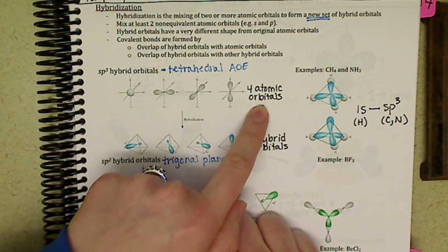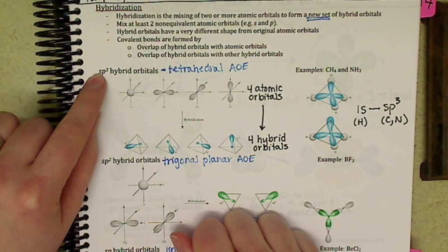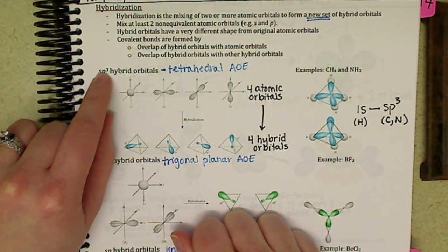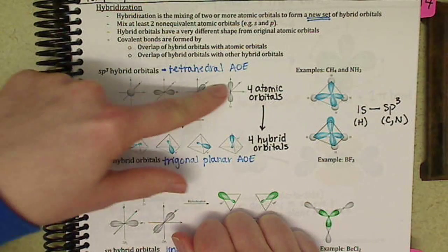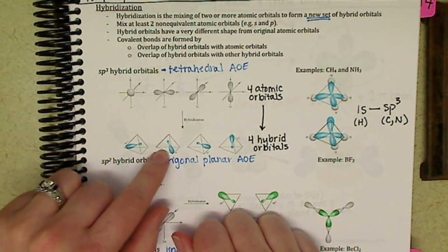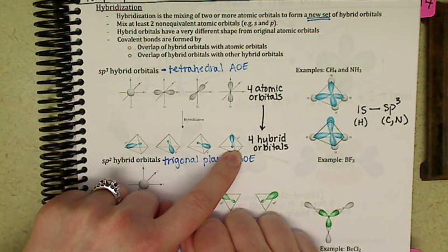So we take our 4 atomic orbitals - we have 1S and then 3Ps, so 1 plus 3 is 4. 4 atomic orbitals, add them up, divide them by 4, and we get our 4 hybrid orbitals.